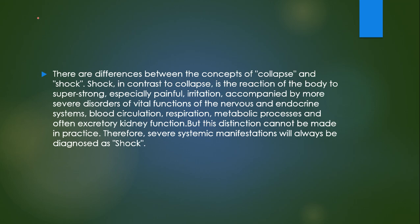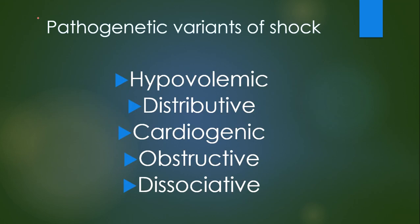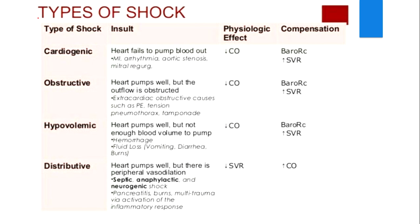In the case of septic shock specifically, if blood pressure is less than 100 mmHg along with other signs of septic condition, you can diagnose septic shock. We have five main pathogenic variants of shock: hypovolemic, distributive, cardiogenic, obstructive, and dissociative.